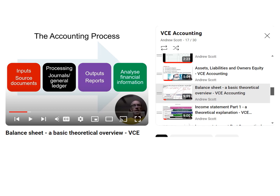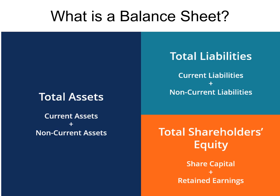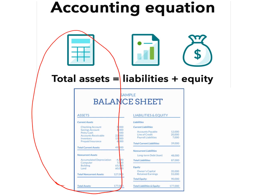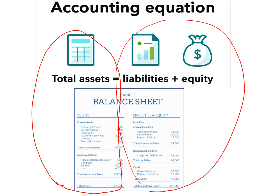Greetings accounting students. I'm going to start with a plug for a clip I created earlier in the year where I did a theoretical overview of the balance sheet, going into detail about our criteria and definition of the three elements: assets on the left, and liabilities and owner's equity on the right. The balance sheet relates to the accounting equation — on the left we have resources, the assets of the business, and on the right we have the claims on those assets: external claims being liabilities and internal or residual claims in terms of owner's equity.